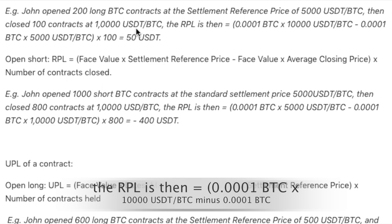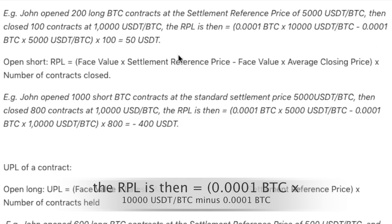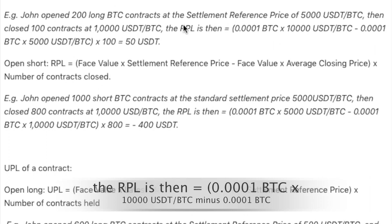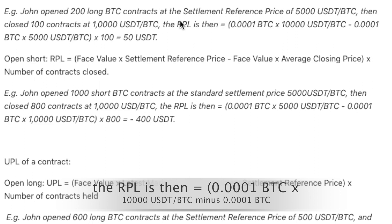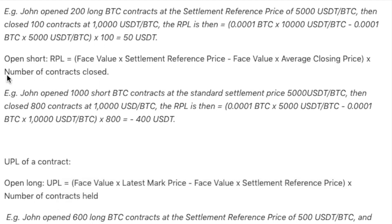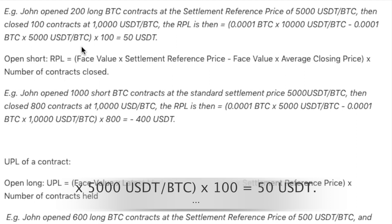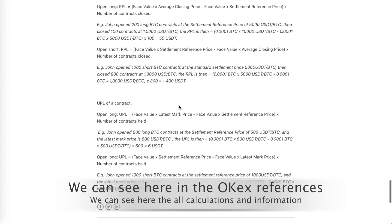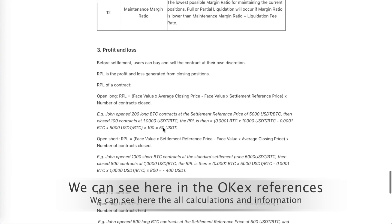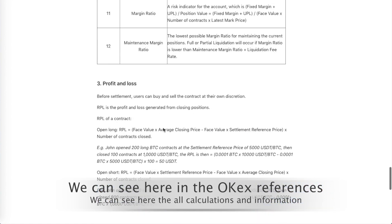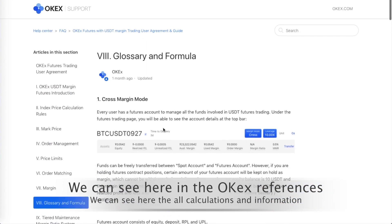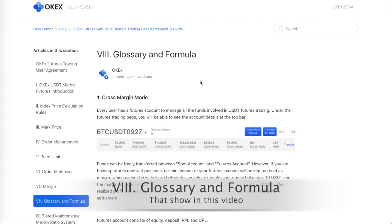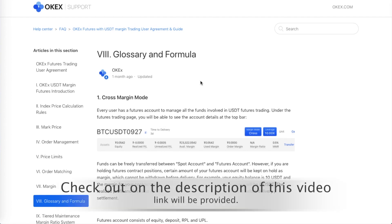The RTL or realized PNL is calculated as: (1/5,000 minus 1/10,000) multiplied by 100 contracts, which equals 15 USDT BTC. We can see this on the OPEX reference — it shows all the calculations for RTL. I will show the full formula here and include it in the description of this video.